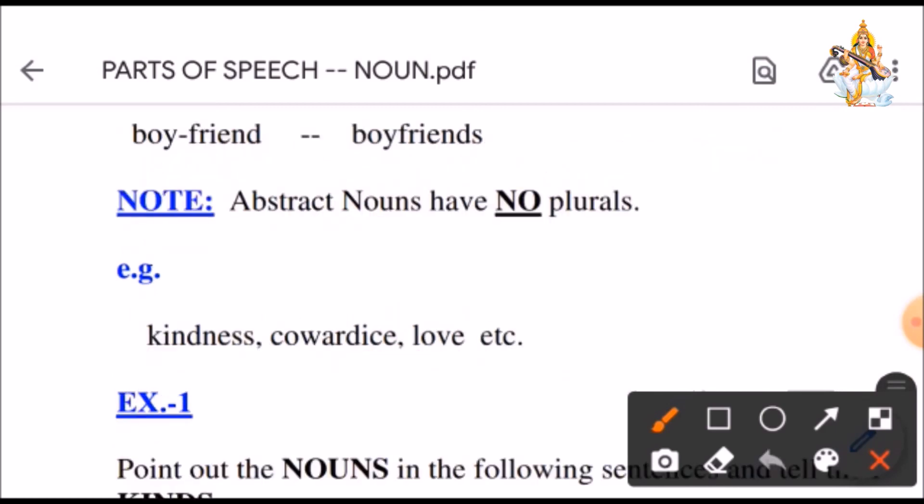This is also very important to remember. Abstract nouns have no plurals. For example, kindness, cowardice, love, etc. These are the qualities and they don't have any plural.